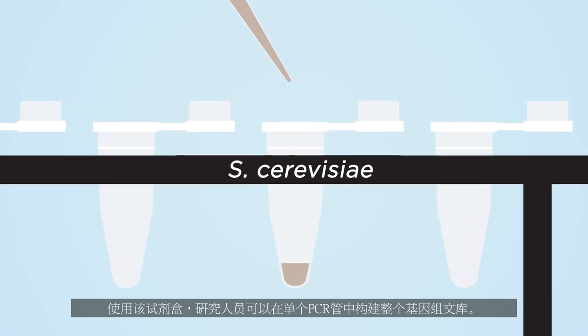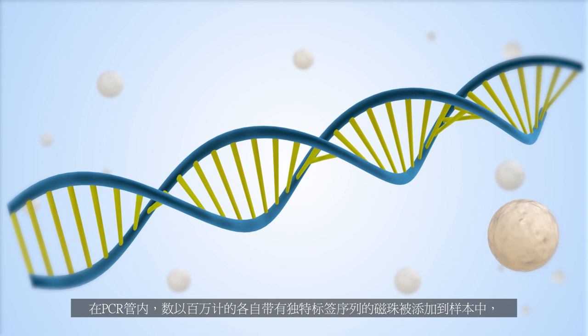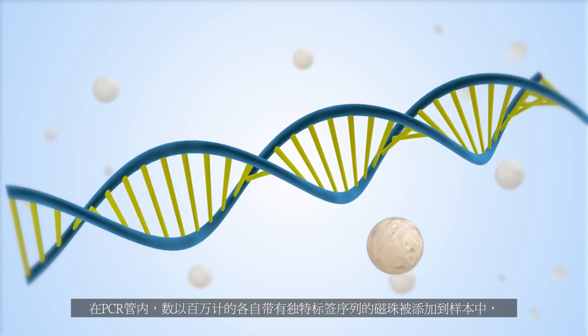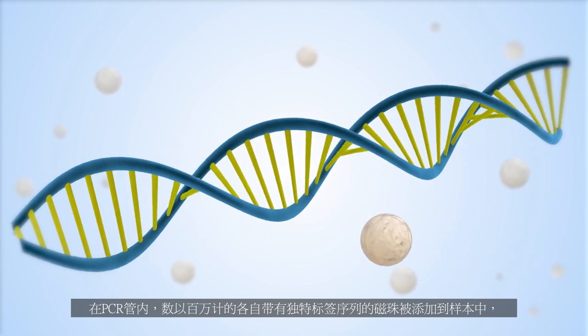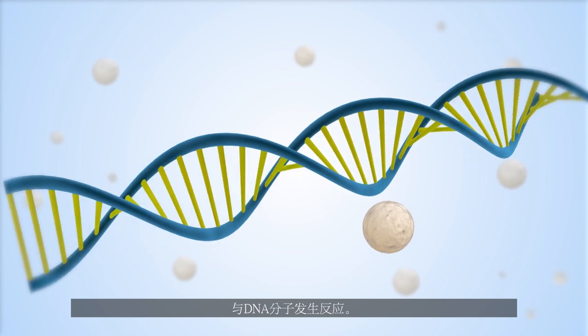Using this kit, researchers can build an entire genomic library in a single PCR tube in under three hours. Inside the PCR tube, several millions of clonally barcoded magnetic beads are added to the sample and react to the DNA molecules.